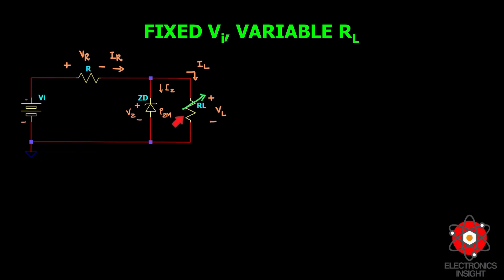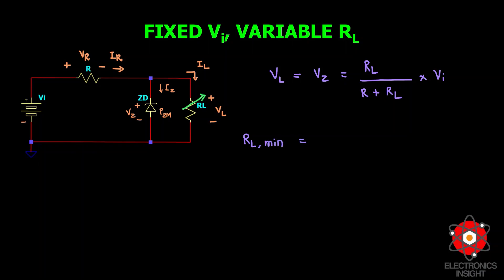To determine the minimum load resistance that must be maintained to turn on the Zener diode, we calculate the value of RL that results in VL equal to VZ. VL equals VZ equals (RL divided by R plus RL) multiplied by VI. Solving for RL gives the minimum value: RL_min equals R multiplied by VZ divided by (VI minus VZ). Any load resistance greater than this ensures the Zener diode is in the on state, and the diode can be replaced by its VZ source equivalent.